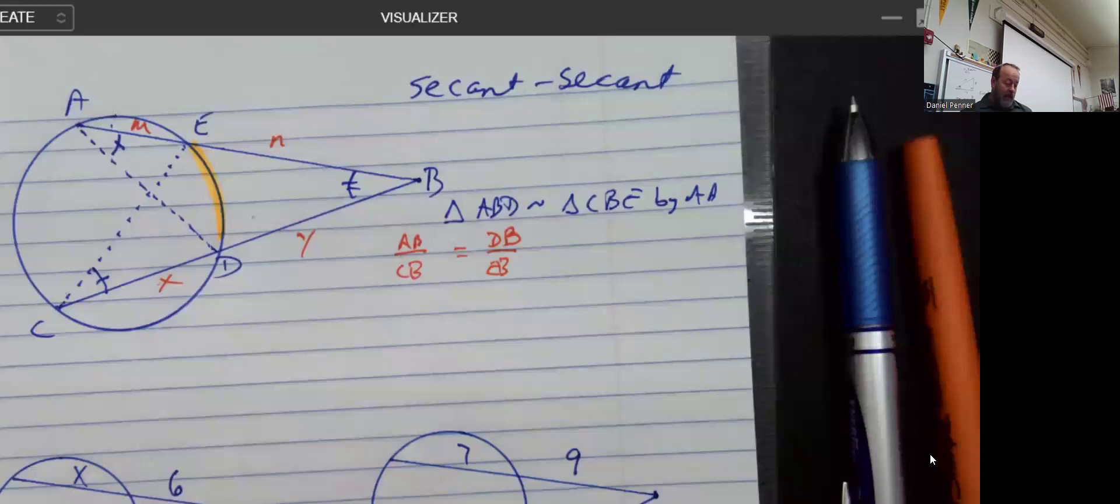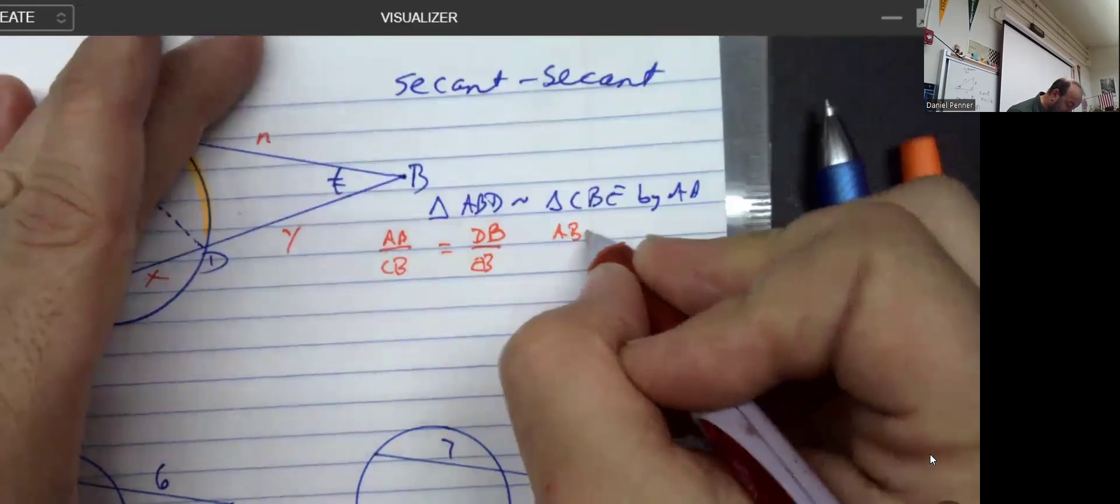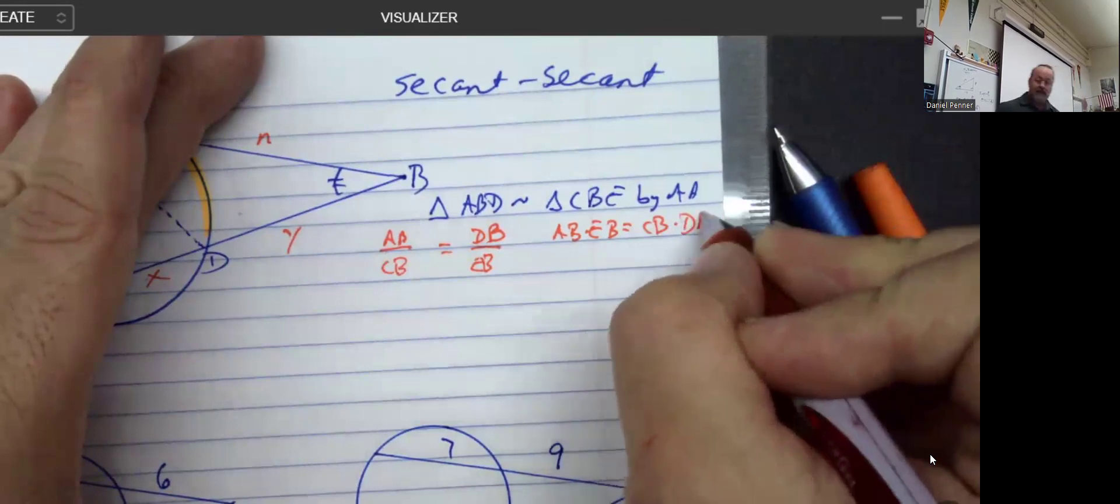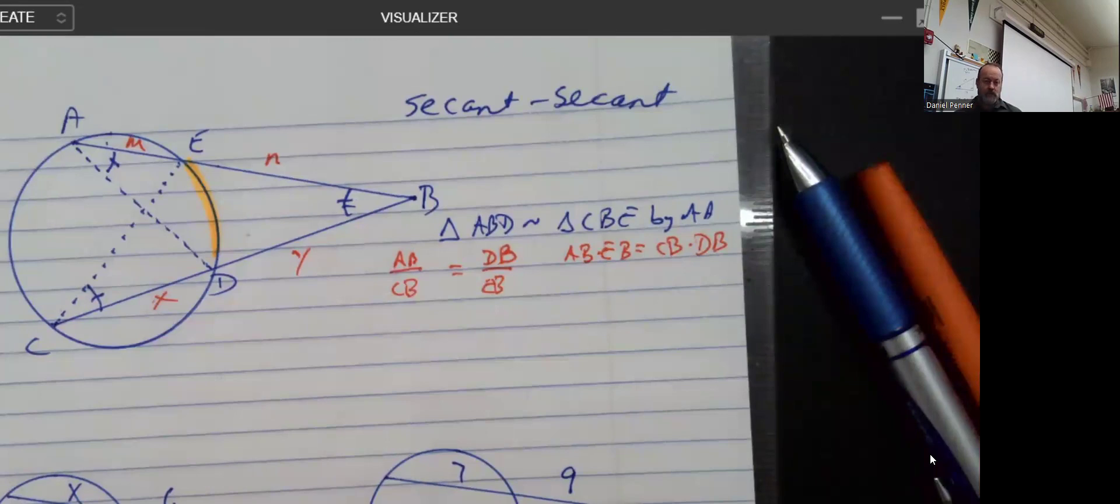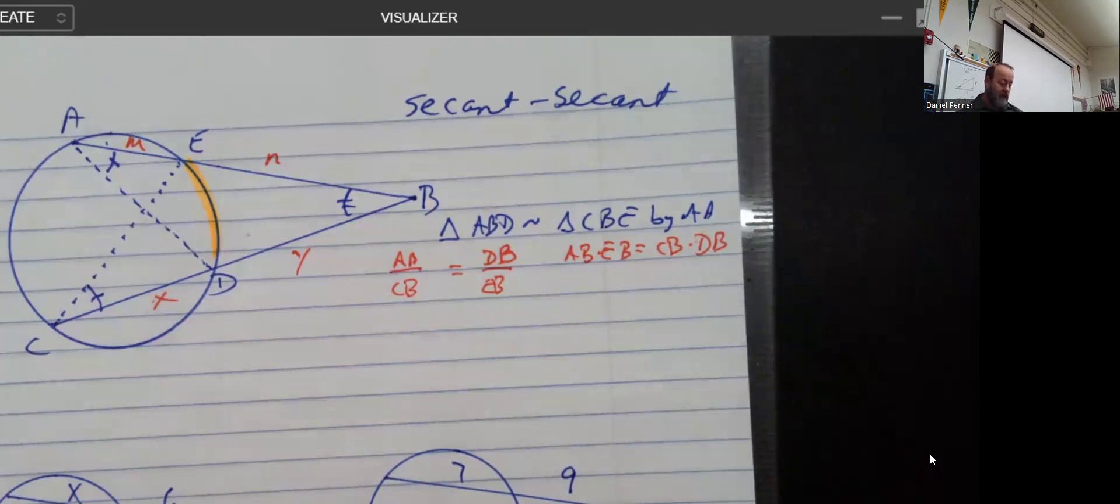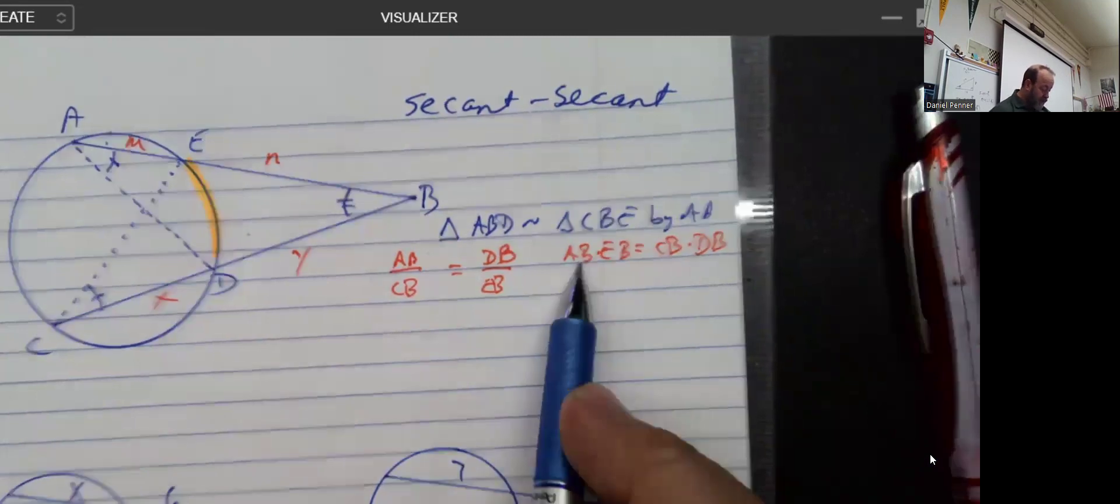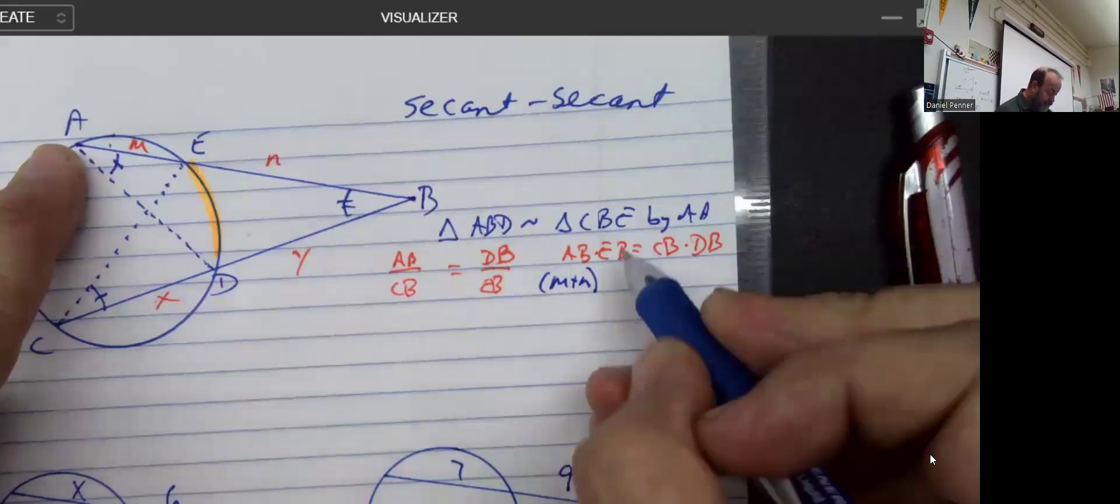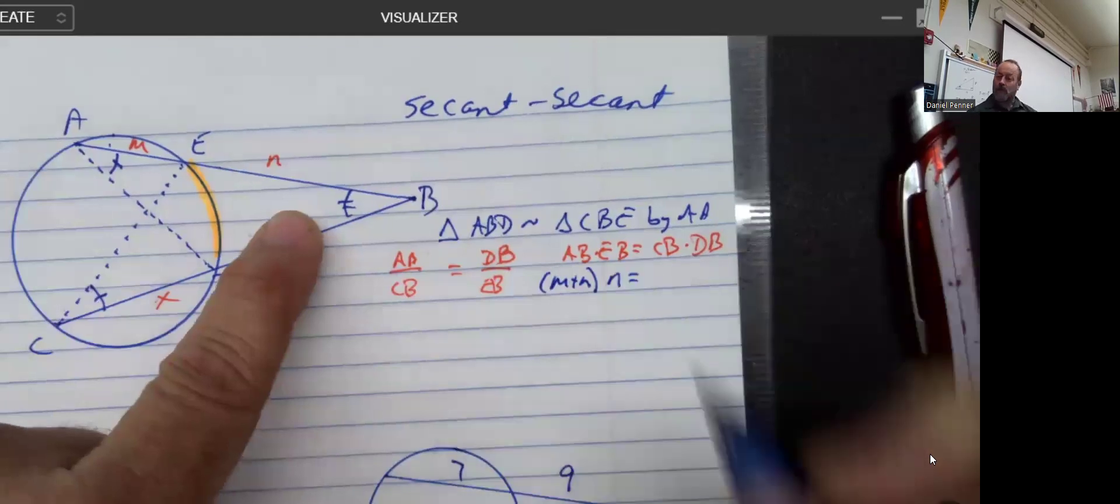So if we were looking at it, we could sort of cross-multiply really quickly and say that the product of AB times EB is the same as CB times DB. Now, that's how the textbook calls it. I just have always had a hard time just using the letters to do that. I find it a little bit easier to think about them just as a single variable segment. And so what I see is the distance from A to B is all the way right here, which is M plus N. And EB, as it turns out, is just N. So that's a little bit interesting. Notice that N plays a role twice.